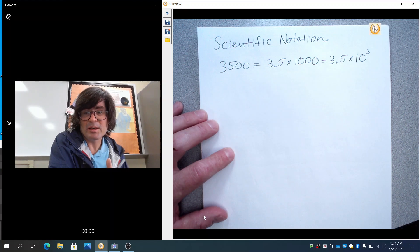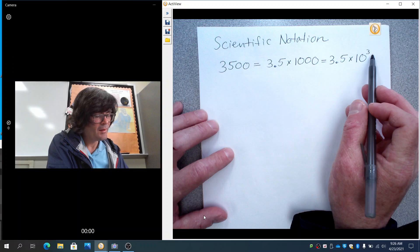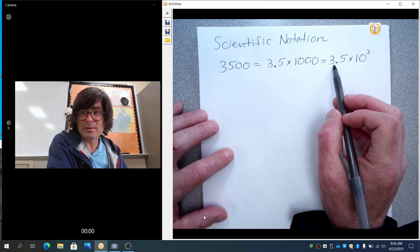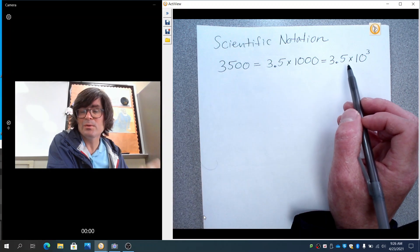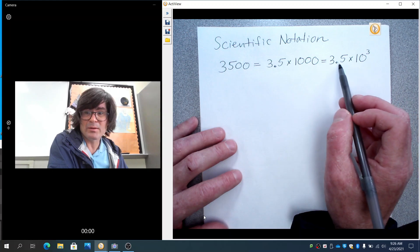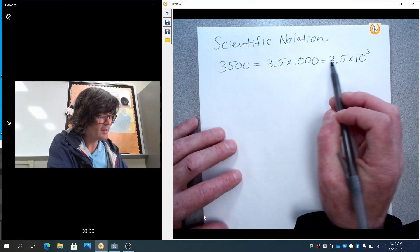Now, scientific notation has a couple of requirements. One is that we have a 10 to a power, and then also this front number has to be between 1 and 10. That's conventional. If you had a number out front that was 72, you would need to bring a 10 out of that and drop it down to 7.2. We'll talk about that.